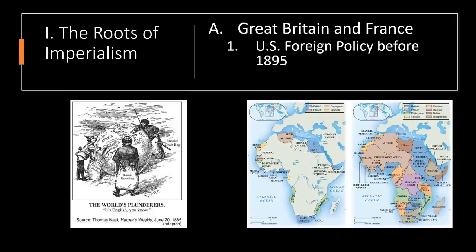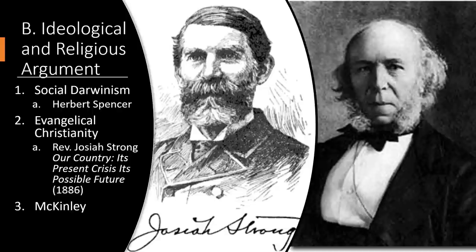American foreign policy before 1895: the United States maintained normal diplomatic and trade ties with foreign nations. US officials showed little interest in the continent of Africa, but in the words of Henry Cabot Lodge, 'we must not be left behind.' To make an argument for imperialism, we look at the ideological and religious arguments. Scholars, authors, religious leaders, and politicians supplied related arguments for American imperialism that combined, first, social Darwinism.